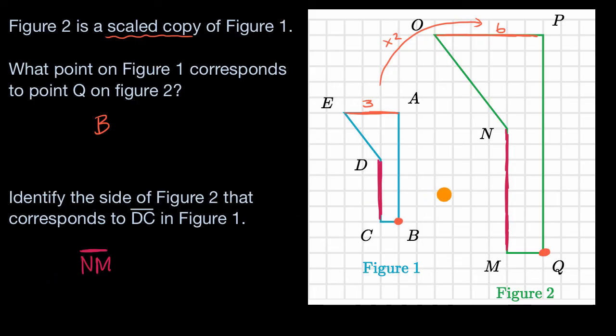And we can once again verify the scale factor to ensure that this is a scaled copy. For these two to correspond to each other and for these to be scaled copies of each other, DC has a length of one, two, three, four. And NM has a length of one, two, three, four, five, six, seven, eight. So once again, we are verifying that our scale factor is two.